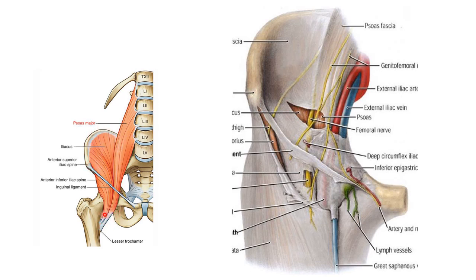The iliopsoas inserts at the lesser trochanter. The two fascias we pierce when performing a fascia iliaca block are fascia latae and fascia iliaca. Fascia latae comes from the tensor fascia latae muscle, and fascia iliaca takes its name from the iliacus muscle.